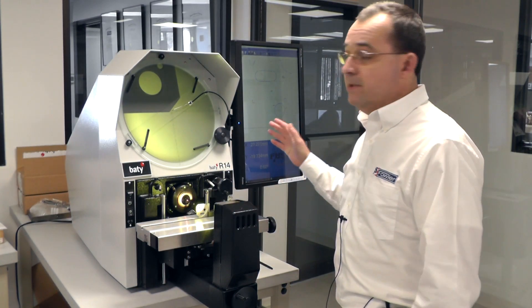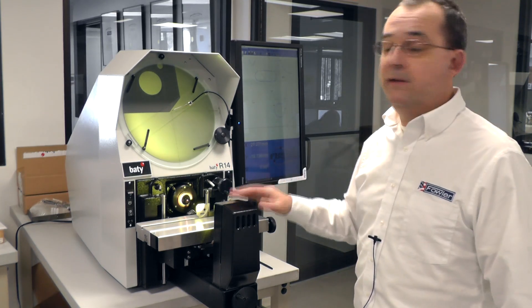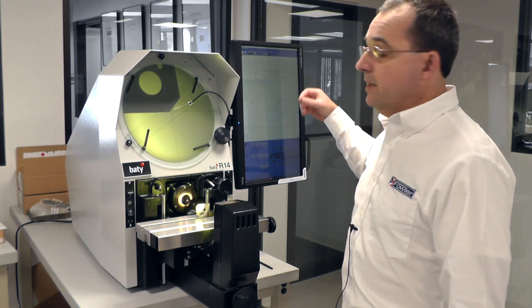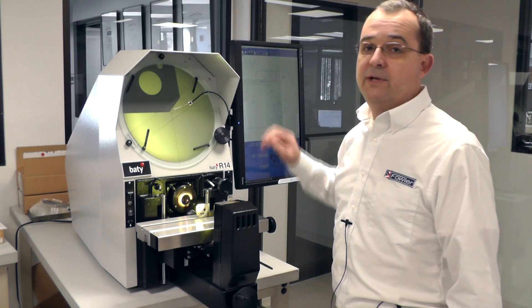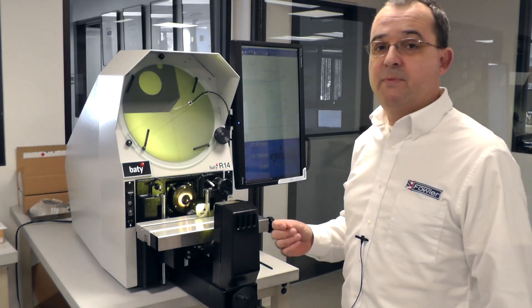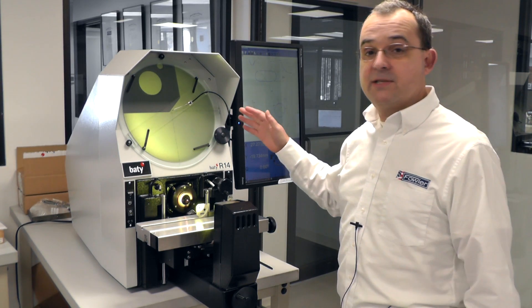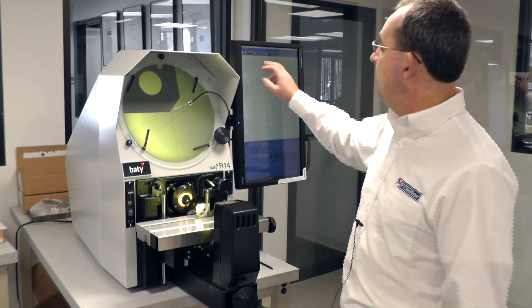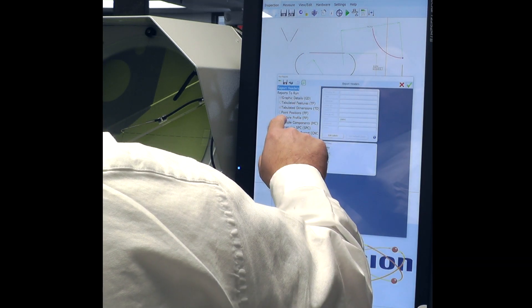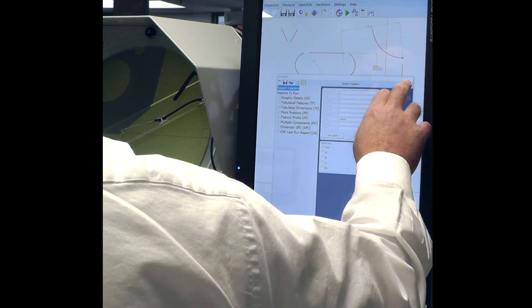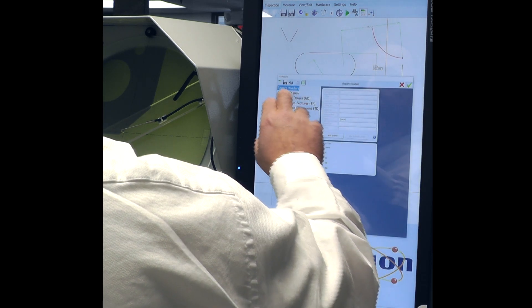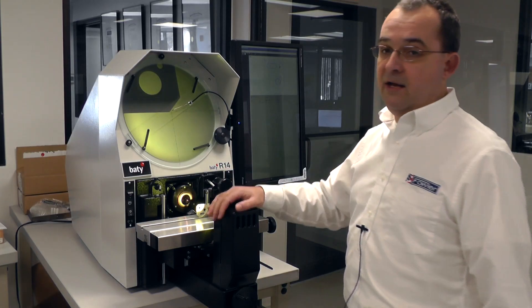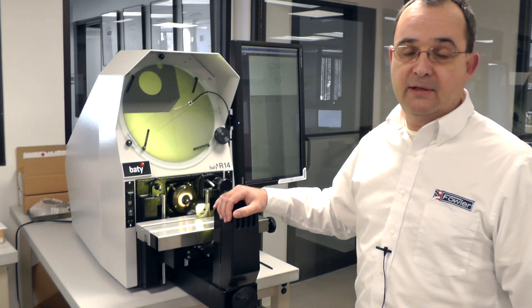One of the big advantages to going to a PC-based software on an optical comparator is the ability to take the data that you can measure and construct on virtually any readout, but this one specifically. And you can export that data quite easily because we're using a true Windows 10 PC here. You can export it via the Ethernet port, USB, or you can take it and dump it into an Excel file that can actually be resident on this PC. So you have the ability to generate quite impressive reports. And those reports can be in a variety of different types and can be saved online or offline depending on what you need for your SPC requirements.